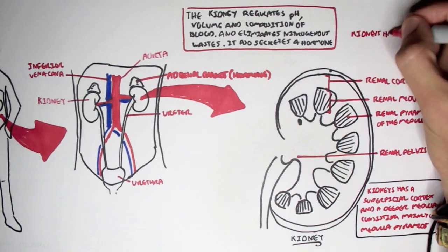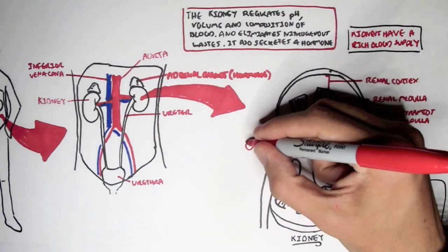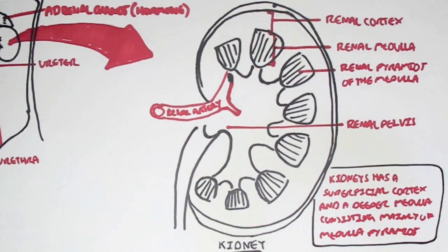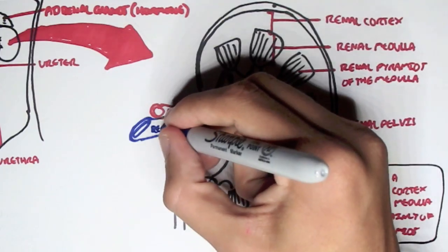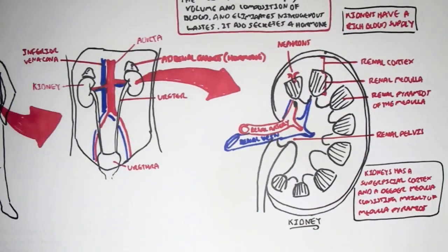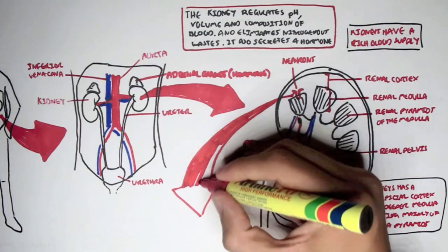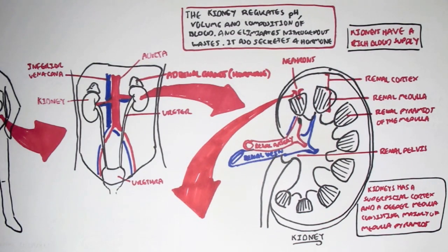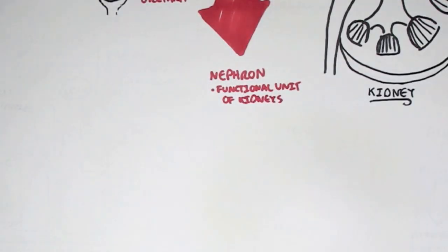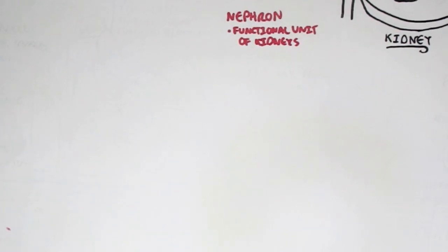The kidneys have a very rich blood supply because this is how they regulate blood pH, volume, and composition. The artery which brings blood into the kidneys is called the renal artery. The most important thing about the kidney is that they contain what's called nephrons, which are situated in the renal cortex and in the renal medulla. These nephrons are the functional unit of the kidneys, and we have about one and a half million per kidney. The nephrons are the ones that actually filtrate, reabsorb, and secrete substances to make urine, and they help regulate blood pH.